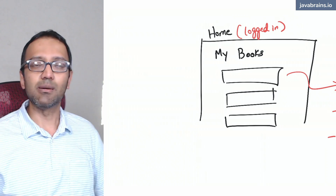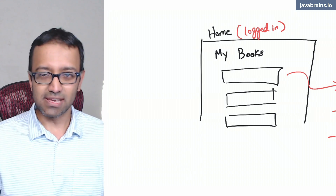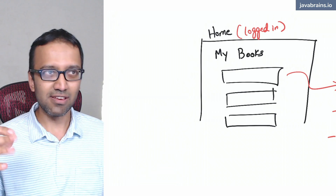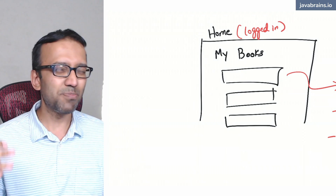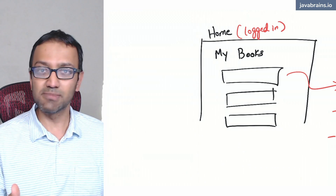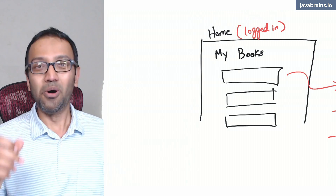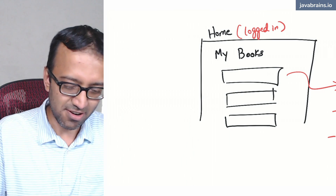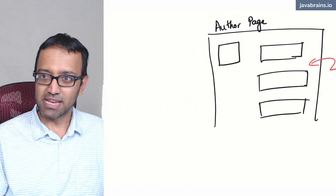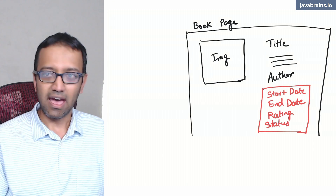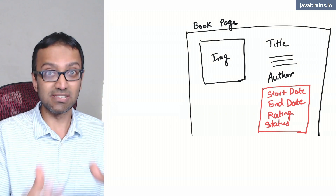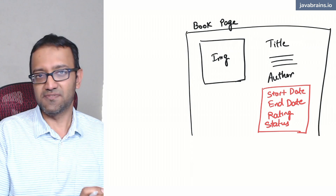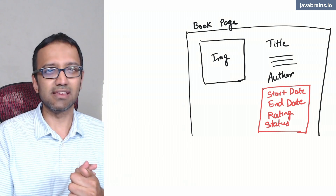Now let's think about what the system design should be. For user information it's manageable, though we should design a system that accommodates millions of users. But we know we have a lot of book data. So how are we going to handle the author page and book page efficiently? What is the system architecture to make sure the whole system works efficiently with this huge amount of data? We'll take a look at that in the next video.